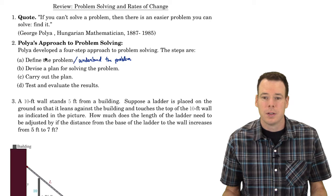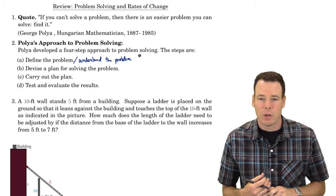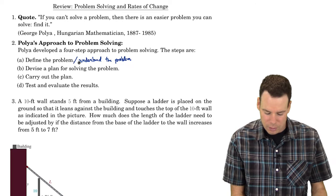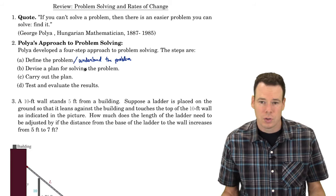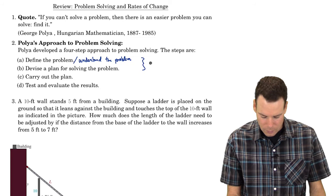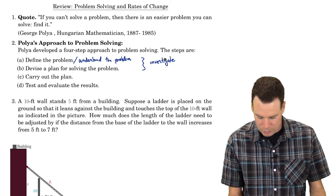In order to understand the problem, that may involve rereading the question multiple times and thinking, okay I think I know what it's asking — let me read it again one more time just to make sure. Once you figure out that you have a good understanding of what the problem's asking for, then you devise a plan for solving the problem — come up with some sort of strategy. These together we can think of as our investigation phase.